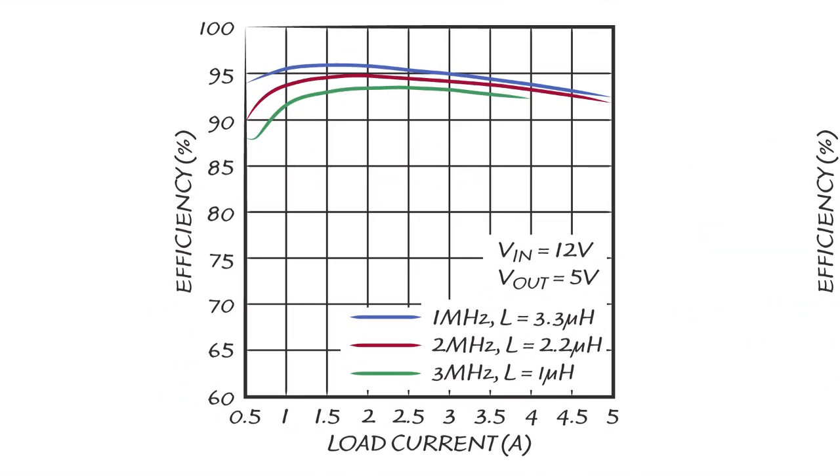Switching losses have been optimized so the LT8640 can operate with high efficiency even at high switching frequencies. We see here the peak efficiency for a 12 volts in to 5 volts out application is very high at 96% operating at a 1 megahertz switching frequency.